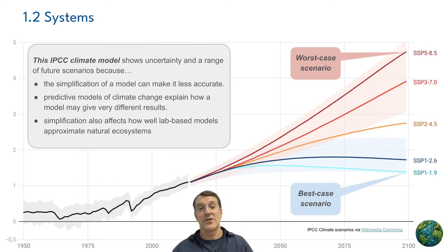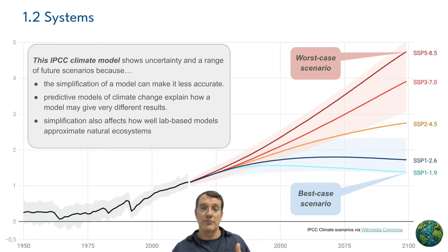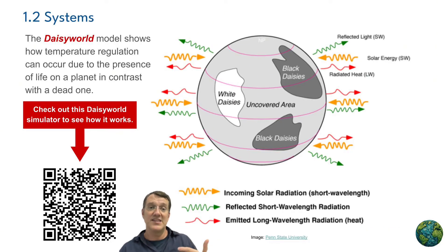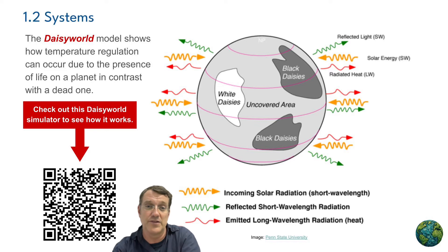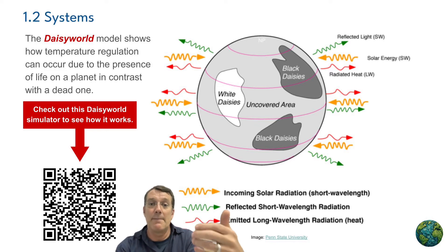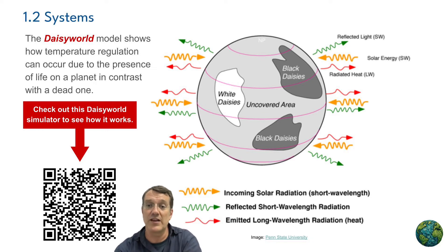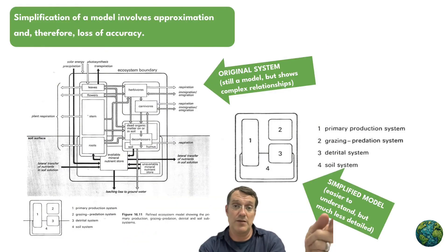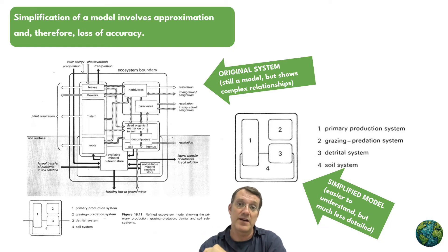The Intergovernmental Panel on Climate Change, or IPCC, presents multiple scenarios to account for this uncertainty, ranging from worst-case to best-case scenario. Similarly, lab-based ecosystem models may not fully capture the complexity of natural systems. Despite these limitations, simplified models remain important and crucial for understanding and predicting system behavior. Take the predictions you get out of models with a grain of salt, because the more complete the data a model is based on, the higher quality model you have.